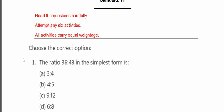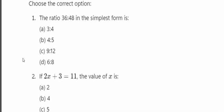Choose the correct option. The ratio 36 to 48 in its simplest form. To find the lowest form, we divide both numbers. We divide 36 and 48 by 12, which gives us the simplified ratio.